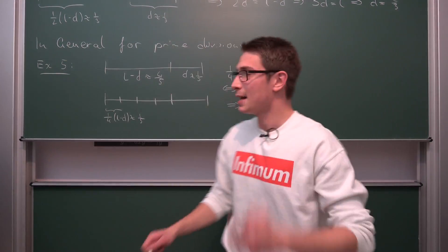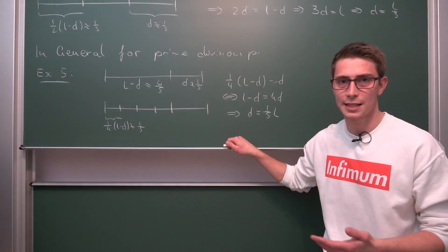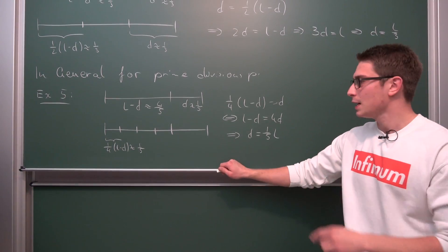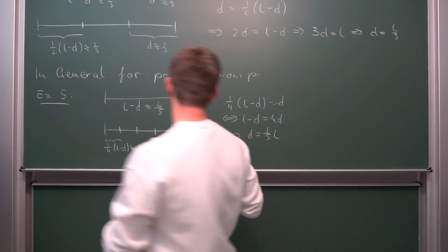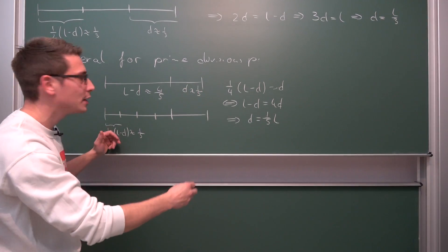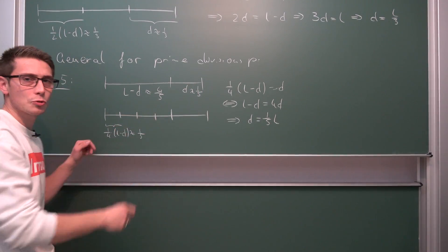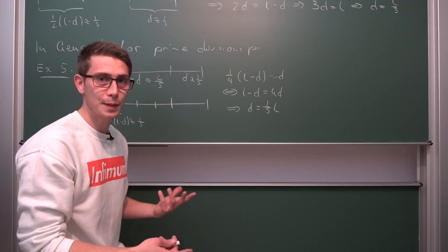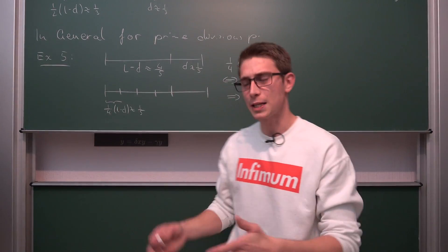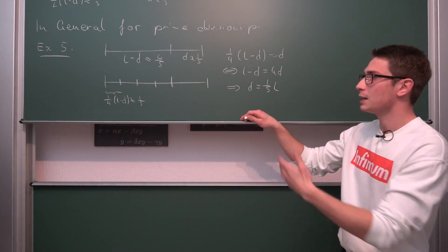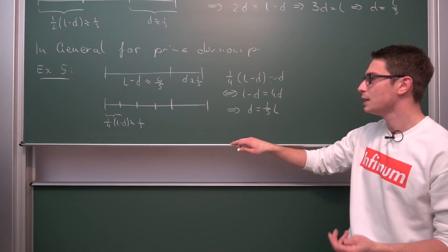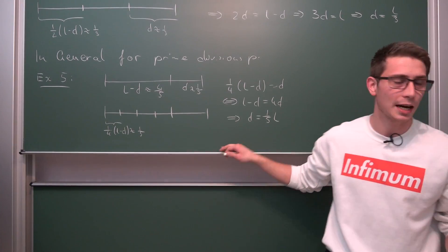This works nicely. In general, if you want to divide something up into a prime number p, you take a bad guess at first — this is going to be one pth of our whole length, meaning L minus d is going to be roughly p minus 1 over p parts. Then we divide this up into p minus 1 parts yet again, giving you an equation which is satisfied by solving for d. It works like this all the time.